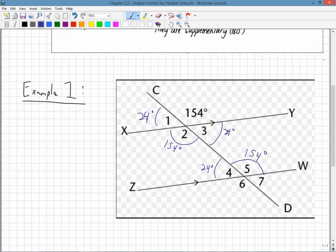And I can finish off the rest of this quite easily. Angle 4 and angle 7 are vertically opposite. Therefore angle 7 is 24 degrees. They have to be equal. And angle 6 and 5 are also vertically opposite. So they must be equal, which means angle 6 is 154 degrees.